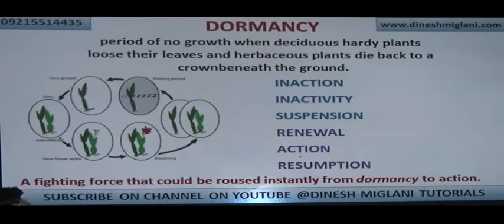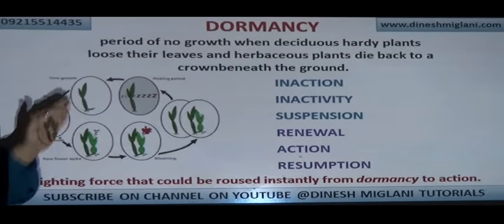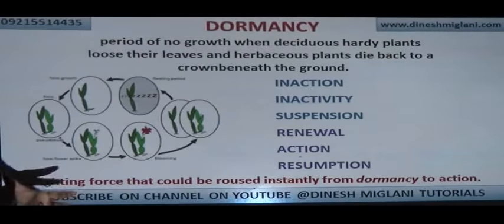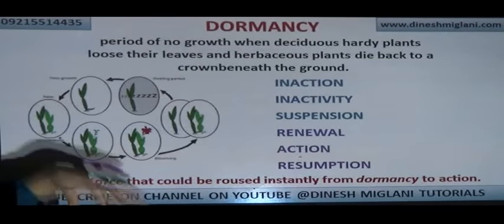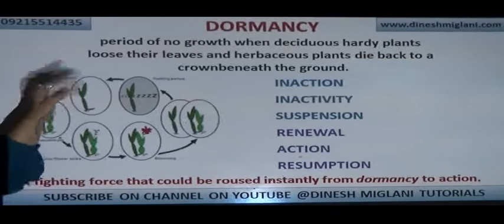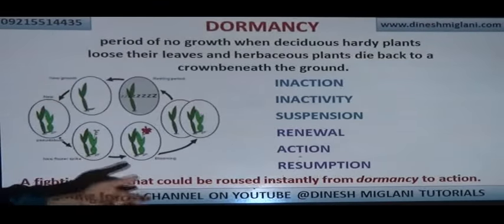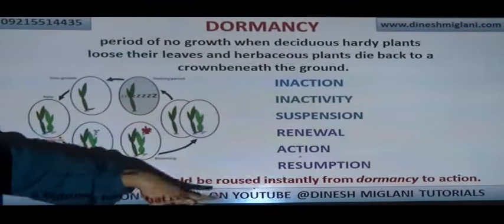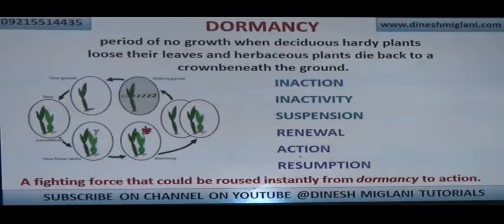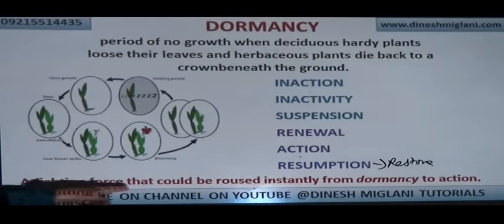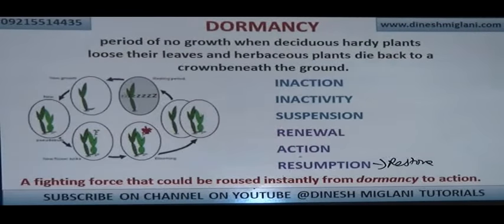Dormancy is a state of suspension where something is not in use or not active anymore. In science, it means a period of no growth of deciduous plants — they shed their leaves and herbaceous plants get buried into the earth. Just remember: it is a stage where something is suspended, in inaction or inactivity. Antonyms: renewal, action, resumption — restored again. Example: 'A fighting force that could be rescued instantly from dormancy to action.'